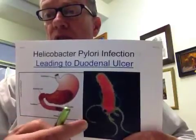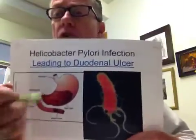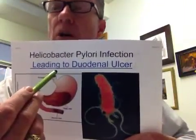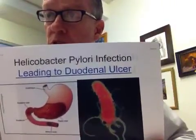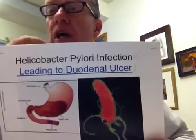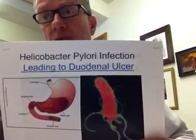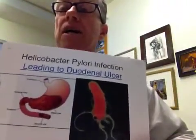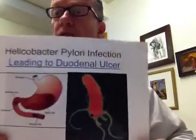If you go to the PowerPoint, you'll be able to see an ulcer as they scope the person's esophagus and then down into their stomach and into the duodenum. You'll be able to spot the very white, hypoxic portion of the duodenum that is ulcerous.